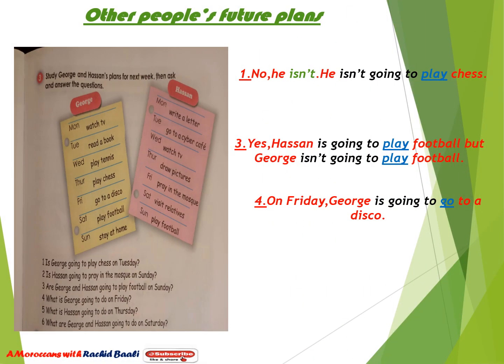Here we are no longer talking about our own future plans but about other people's future plans. We have George and Hassan's next week plans. George on Monday will watch TV, Tuesday read a book, Wednesday play tennis, Thursday play chess, Friday go to a disco, and Saturday play football.